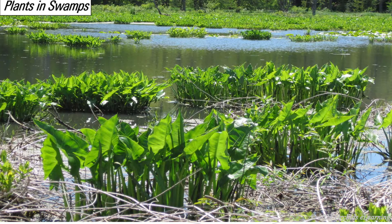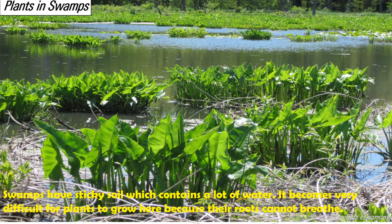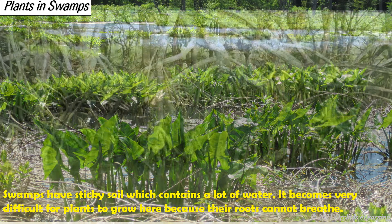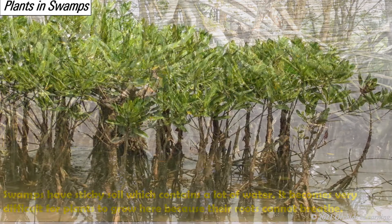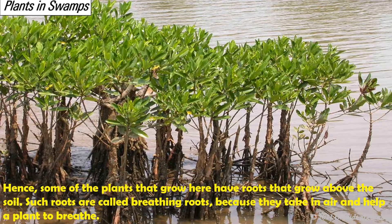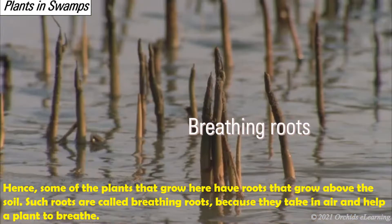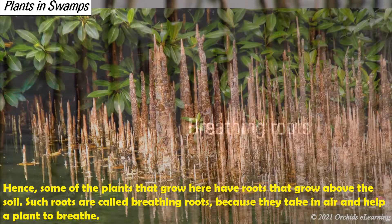Plants in swamps: swamps have sticky soil which contains a lot of water. It becomes very difficult for plants to grow here because their roots cannot breathe. Hence, some of the plants that grow here have roots that grow above the soil. Such roots are called breathing roots because they take in air and help the plant to breathe.